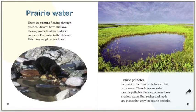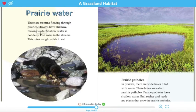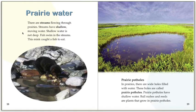Prairie water. There are streams flowing through prairies. Streams have shallow, moving water — shallow water is not deep. Fish swim in the streams. This mink caught a fish to eat. I want you to think about the word shallow. The author even tells you what shallow means, because it says shallow water is not deep. Think about it like a swimming pool — there's a deep end and there is a shallow end, and the shallow end is not deep.